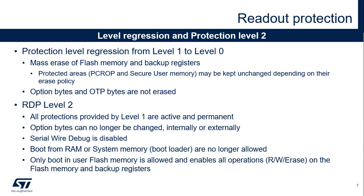We've seen in the previous slide that it's possible to modify option bytes in level 1. It's then possible to remove the protection by changing the protection level to level 0. This protection level regression will cause the flash memory and the backup registers to be mass erased. Flash areas protected by PC-ROP or configured as secure user memory can be erased or left unchanged, depending on their erase policy configuration.